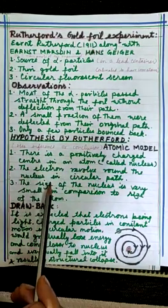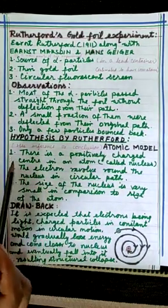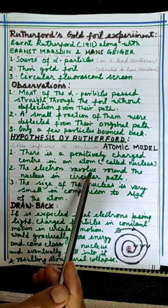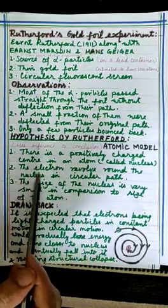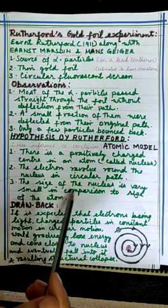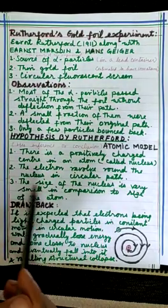The main points of his model were: first, there is a positively charged center in an atom called nucleus; second, the electron revolved around the nucleus in a circular path; and third, the size of the nucleus is very small in comparison to size of the atom.